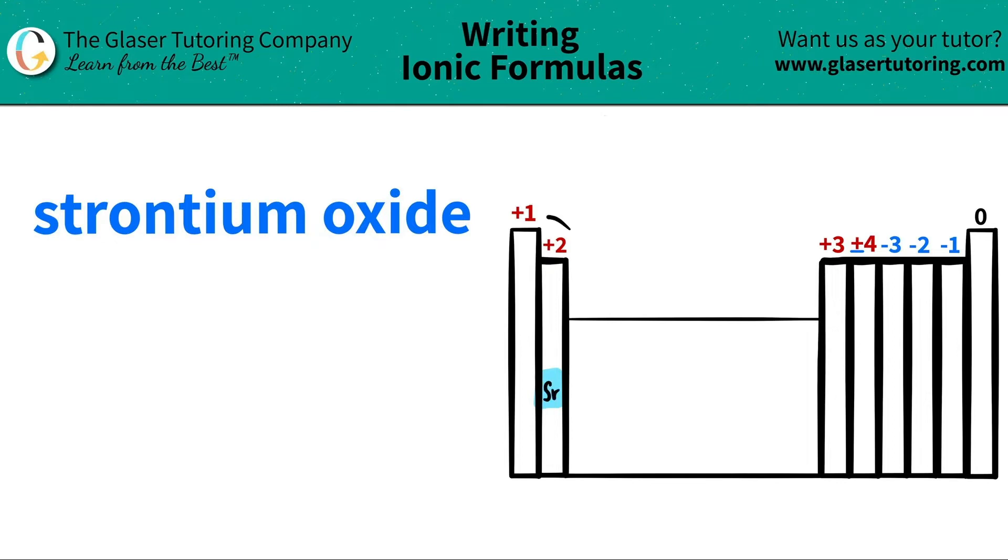So all group 2 metals, group 2 is the alkaline earth metals, they all have a charge of plus 2. So I'm going to start that off. I'm going to say that we have Sr and it's a plus 2 charge.